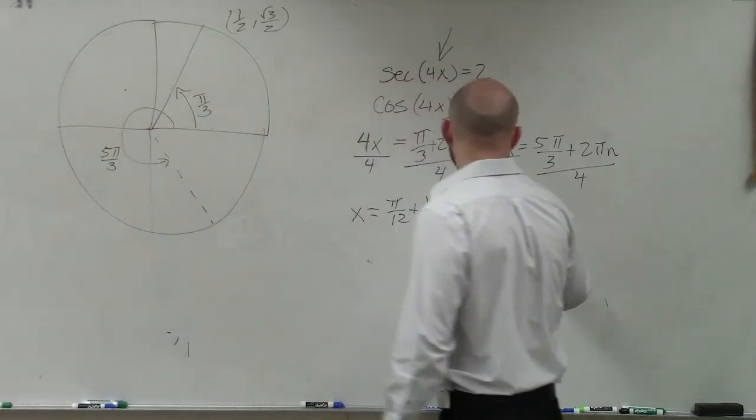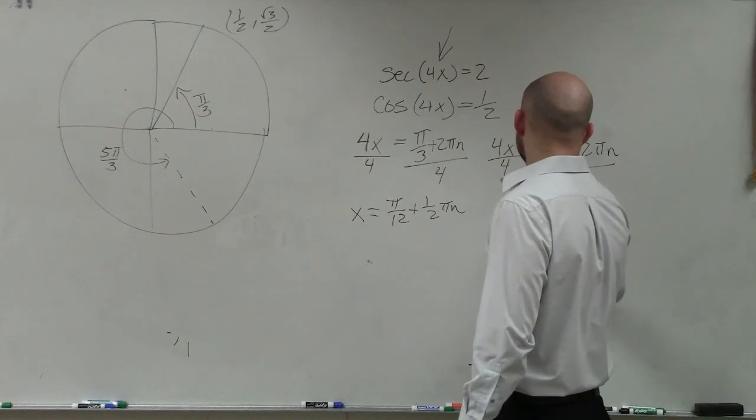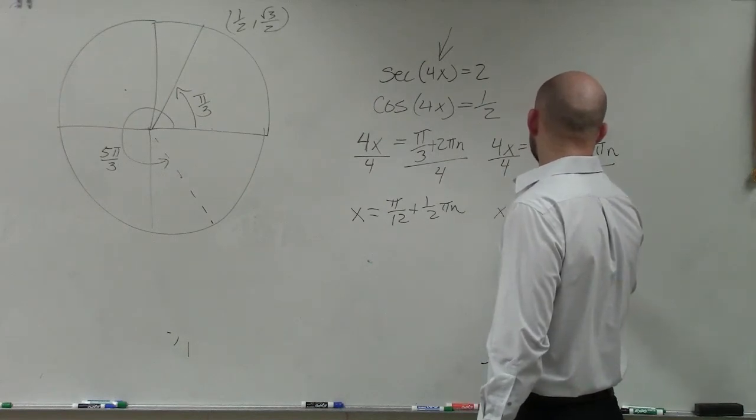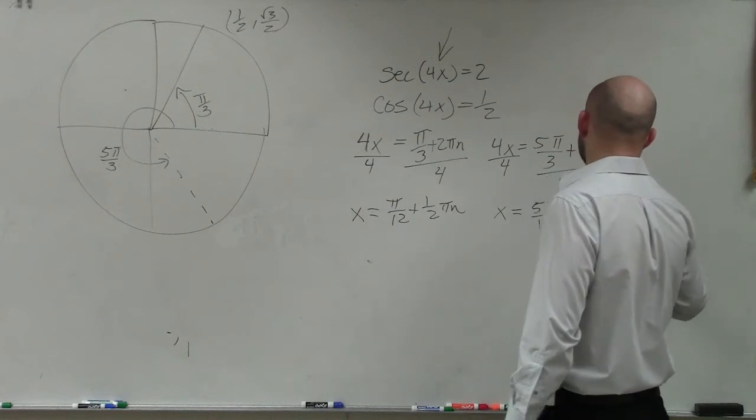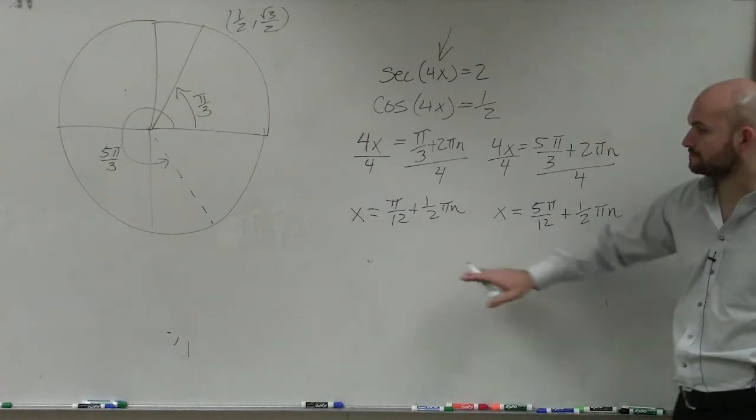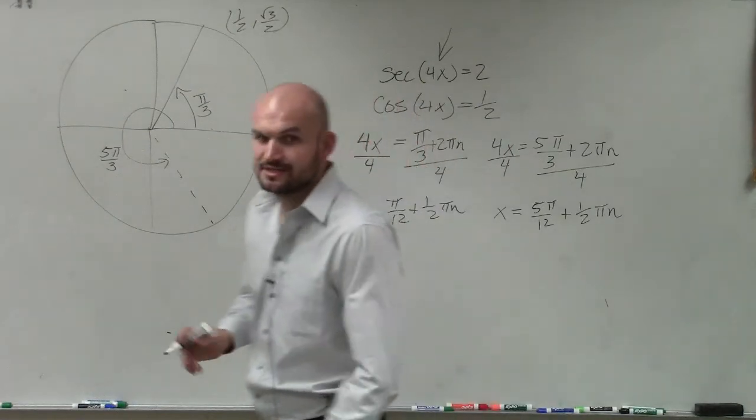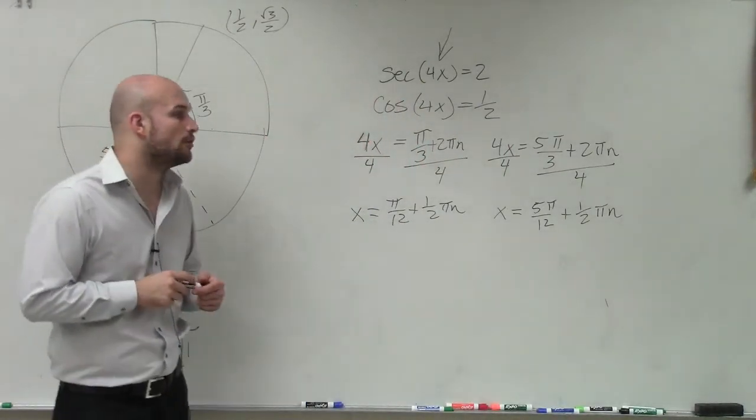Over here, I have x equals 5 pi over 12 plus 1 half pi n. And that is going to be my final solution for all real solutions.